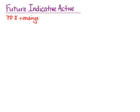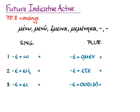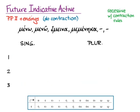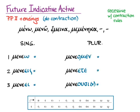If you remember everything you did for epsilon contract verbs with the first principal part, you already know everything you need here, since future endings are like present endings but using the second principal part. With the future indicative active, we take the second principal part plus the endings — ō, eis, ei, omen, ete, ousi — except this time they're going to combine with the epsilon at the end of the stem that we can't quite see in the second principal part of meno. We remember to do the contraction, and so the combined endings we end up with are the contracted forms.